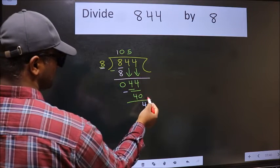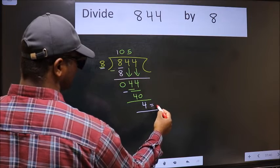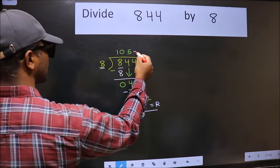No more numbers to bring down. So we stop here. This is our remainder and this is our quotient.